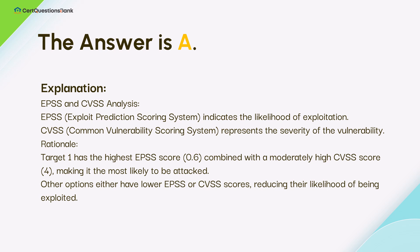The answer is A. EPSS (Exploit Prediction Scoring System) indicates the likelihood of exploitation. CVSS (Common Vulnerability Scoring System) represents the severity of the vulnerability. Target 1 has the highest EPSS score of 0.6, combined with a moderately high CVSS score of 4, making it the most likely to be attacked. Other options either have lower EPSS or CVSS scores, reducing their likelihood of being exploited.